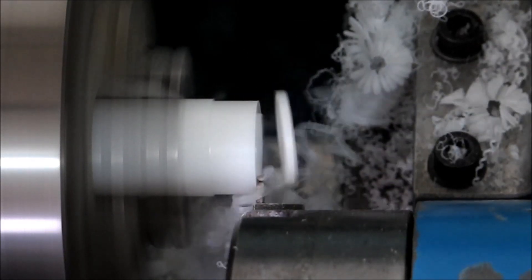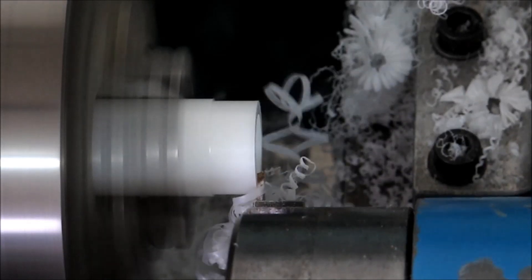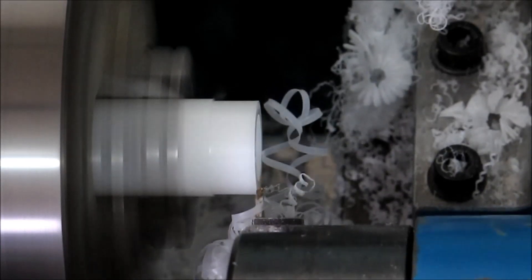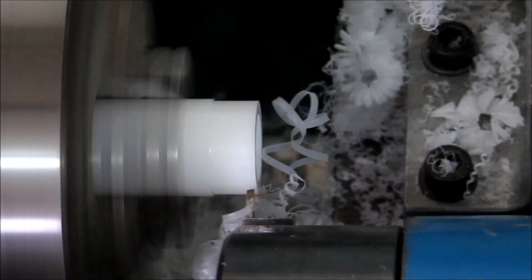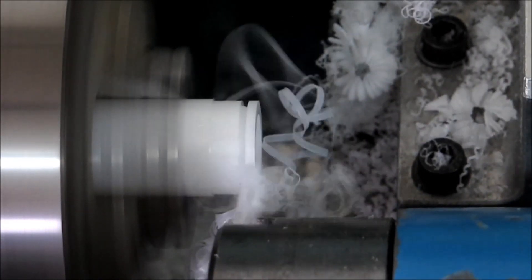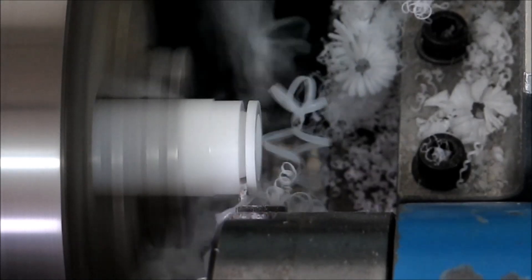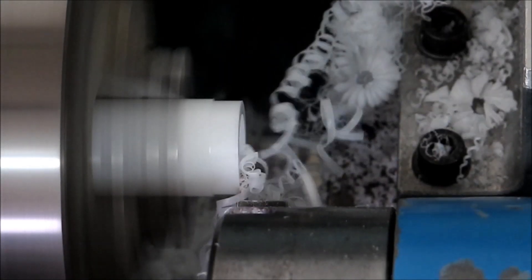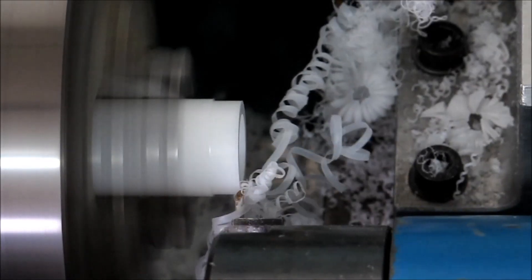When you've got 300 parts to make, you really need to make them as efficiently as you can without swarf tangling you up everywhere. Slowed to 1/8 speed again, you can see the angle of the cut, which is obviously the angle of the front of the parting tool.